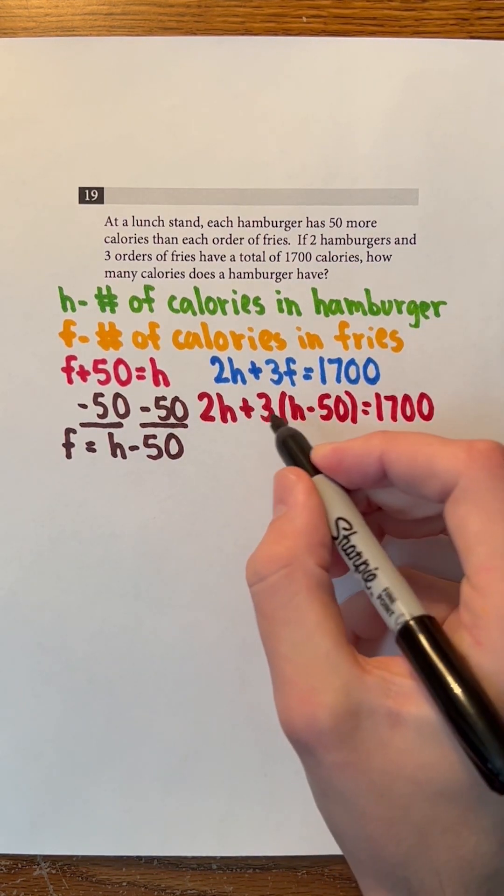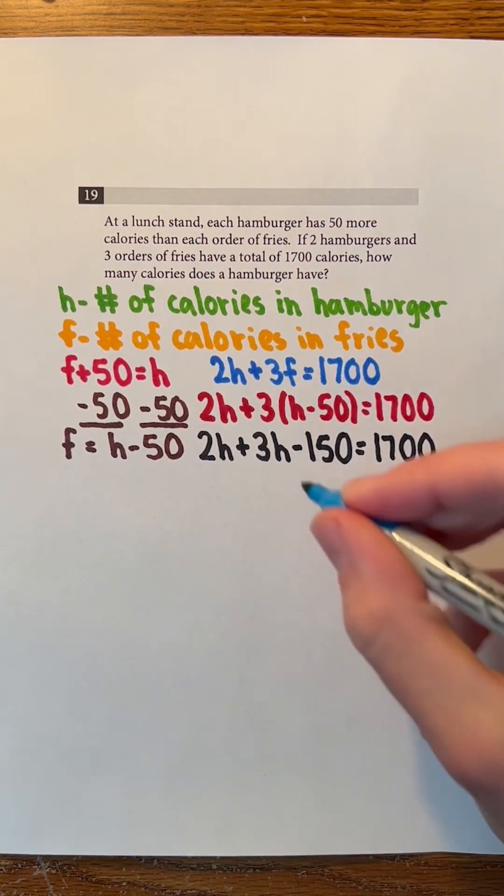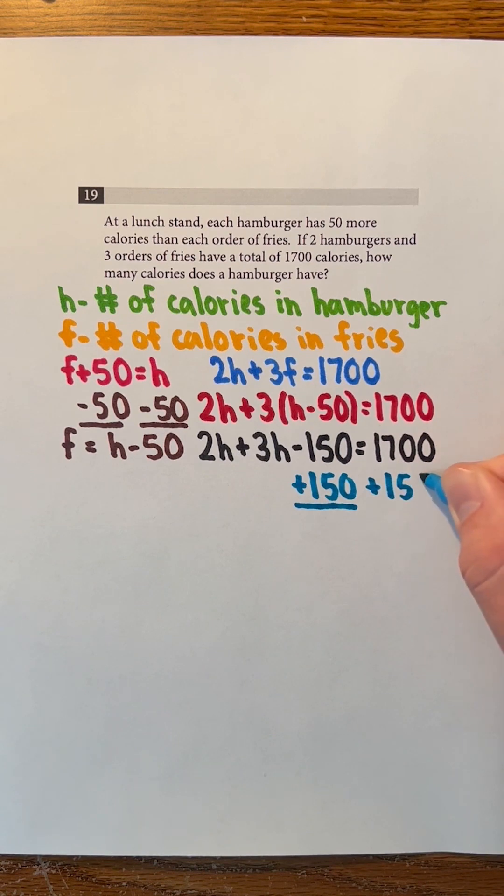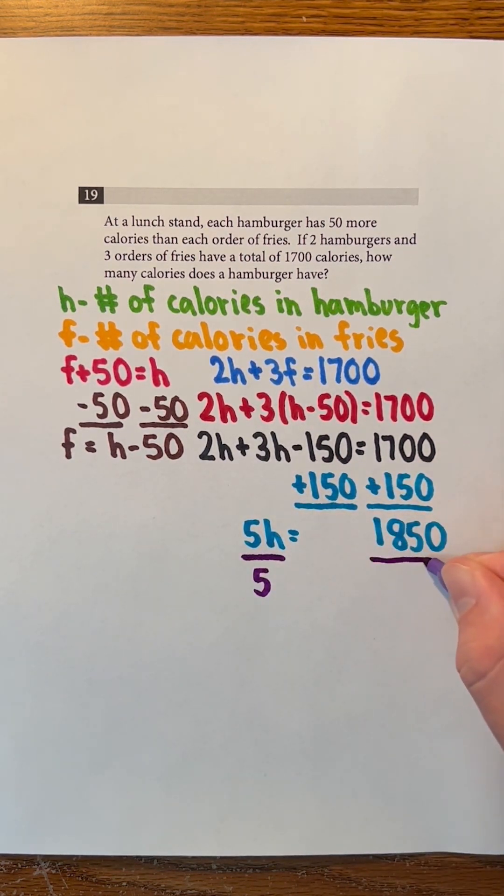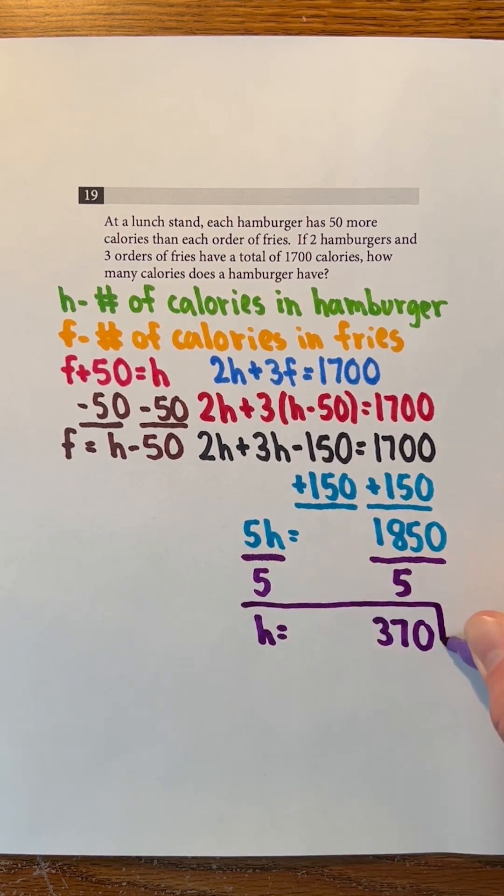Now we can solve for H. Three times H is 3H and three times negative 50 is negative 150. Next, we'll add 150 to both sides of the equation, and 2H plus 3H is 5H. Lastly, we can divide both sides of the equation by 5 to see that H, the number of calories in a hamburger, is 370.